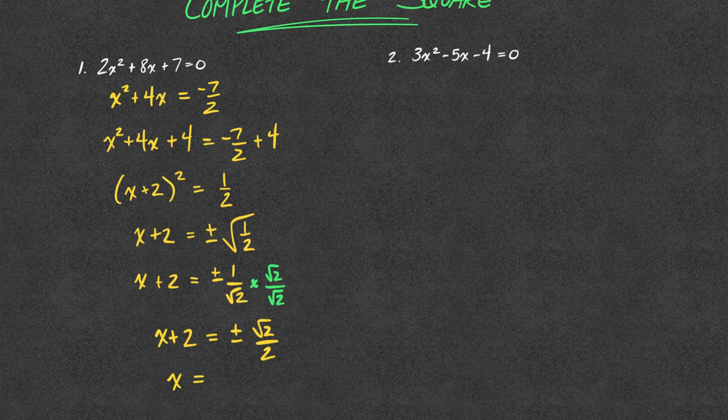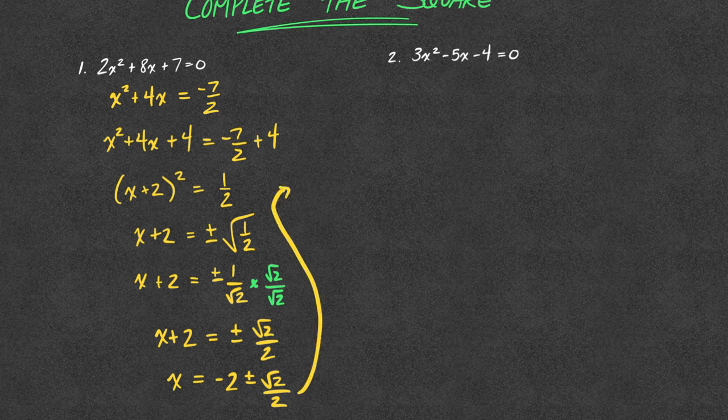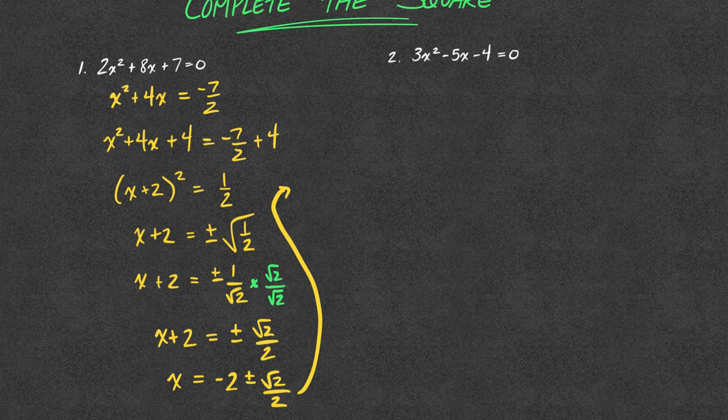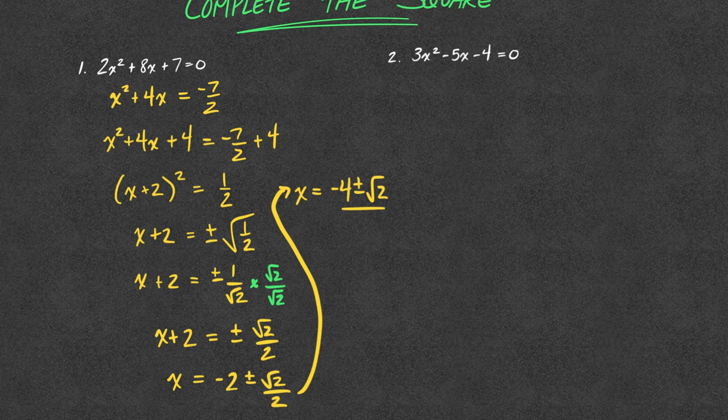Okay, now what I need to do is isolate. So I got to get rid of that plus 2. I am going to minus 2. Now, that right side is not simplified. Notice I have two terms. I can simplify that to one term by getting a common denominator. And there we go.